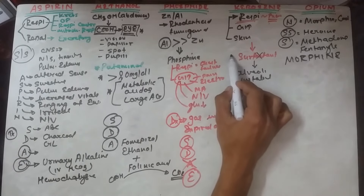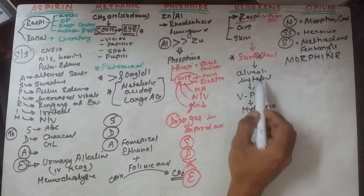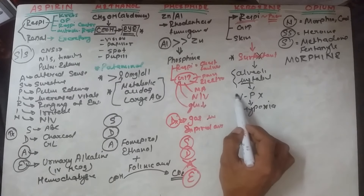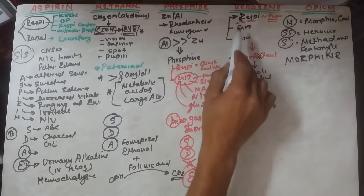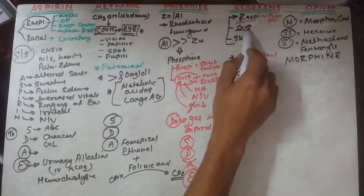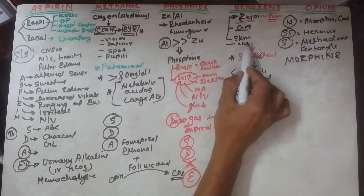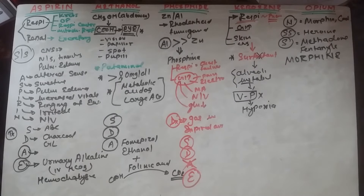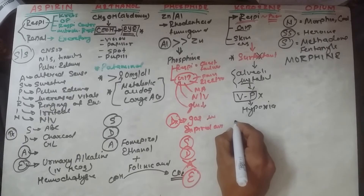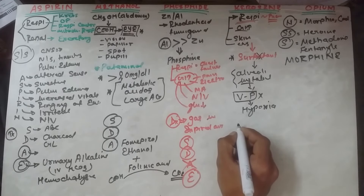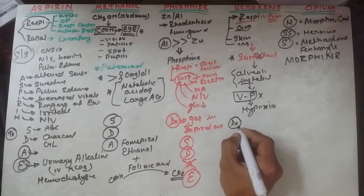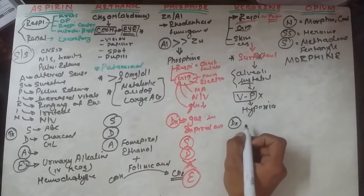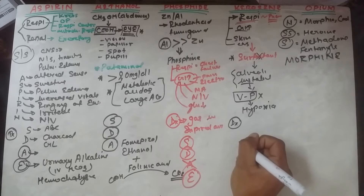Clinical features of kerosene poisoning: respiratory symptoms, GIT symptoms, skin manifestations (burns), and CNS symptoms including lethargy, semi-comatose state, coma, and convulsions. Complications include pulmonary edema, respiratory failure, and empyema. Diagnose by chest X-ray to rule out pneumonia, and liver function tests for GIT or liver abnormalities.